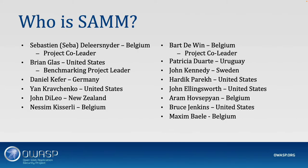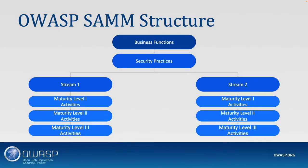At the top level we have business functions — categories of security activities related to the essentials of software development, and there are five of them. Then we have security practices, three per business function, that build assurance for the related business function. Each practice is split into two cohesive streams with three maturity levels. Each level is characterized by a successively more sophisticated objective defined by specific activities — level one is typically easy to achieve, level three might be impossible for some organizations given their budget and ambitions.